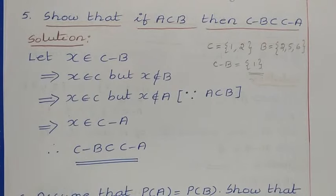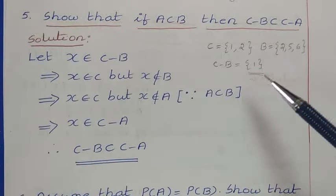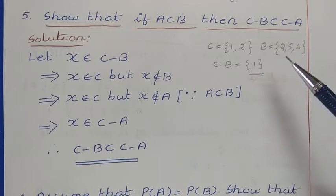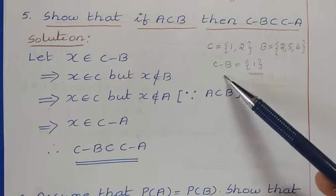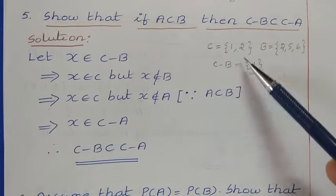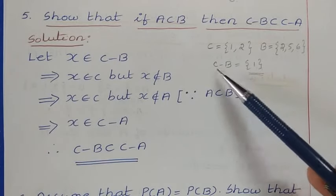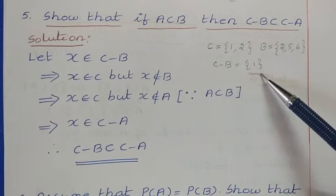Question number 5: show that if A is a subset of B, then C minus B is a subset of C minus A. Before solving the question, let us first see what C minus B means. C minus B means we have to remove all the elements of the B set from the C set. The remaining is nothing but C minus B.